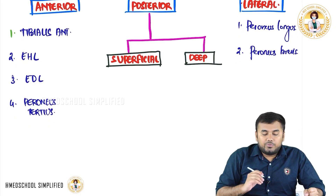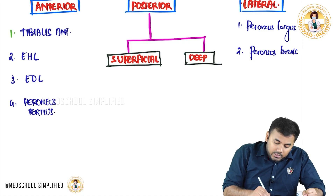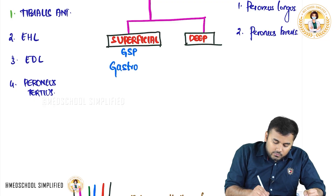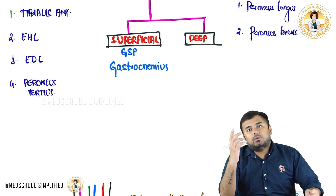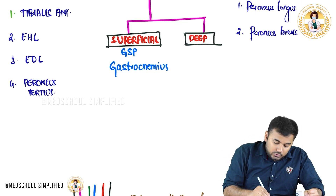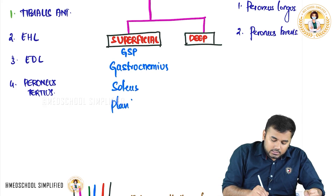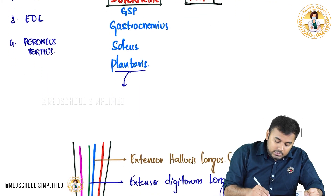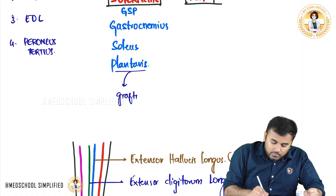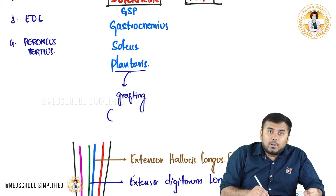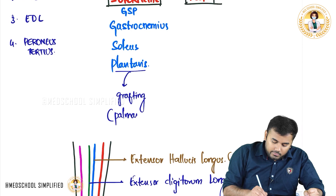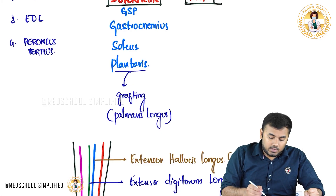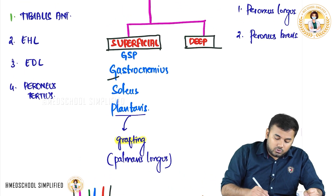In the posterior compartment, we have superficial and deep groups. For the superficial muscles, remember the mnemonic GSP — 'gossip.' G stands for gastrocnemius, which has two heads (lateral and medial). S stands for soleus. P stands for plantaris, which has a very long tendon used for grafting surgeries. Similarly, palmaris longus in the upper limb is also used for grafting — this is a very important point.